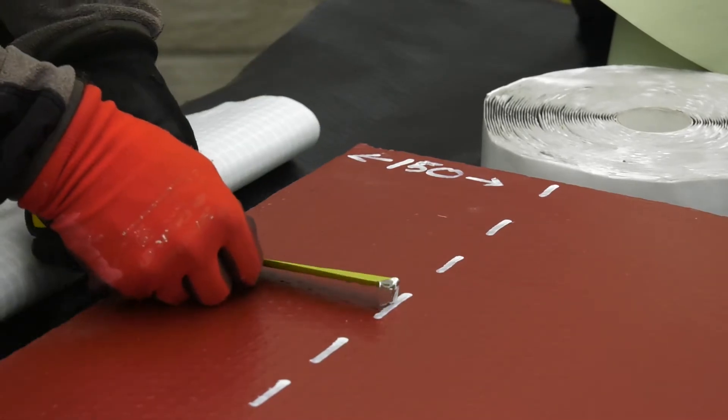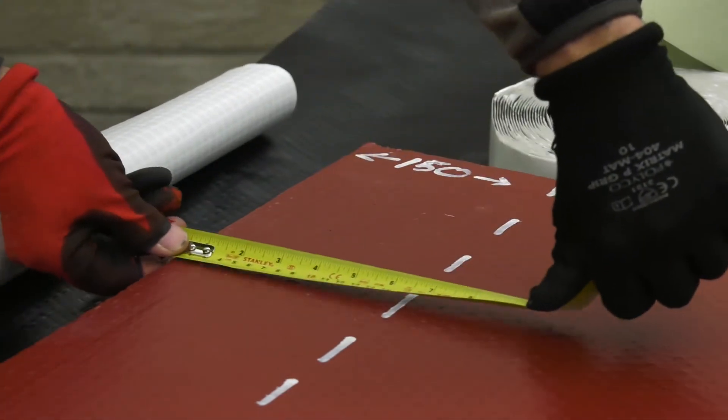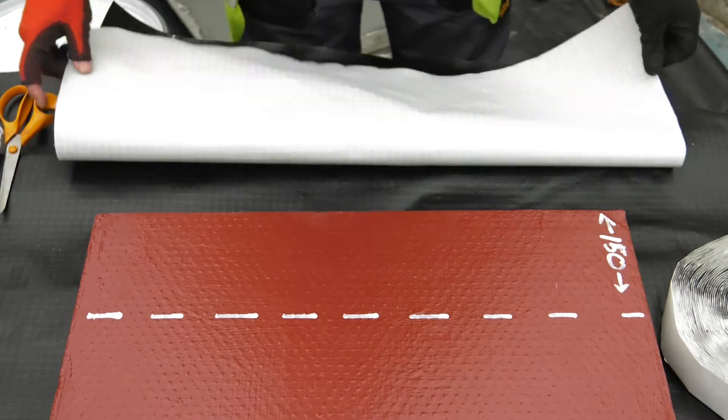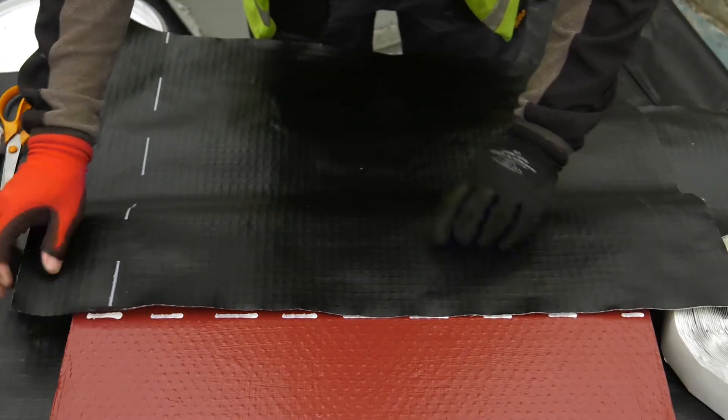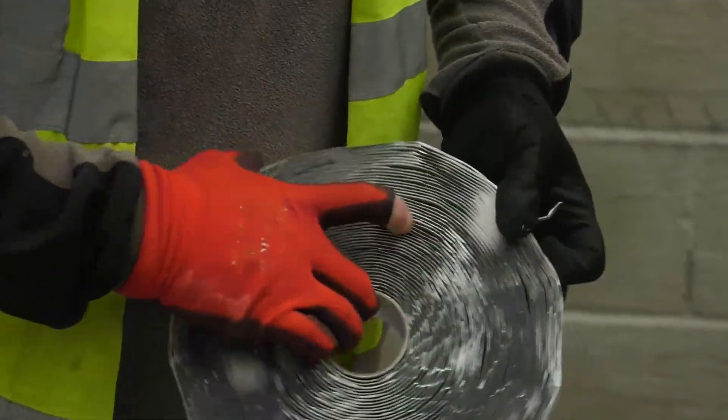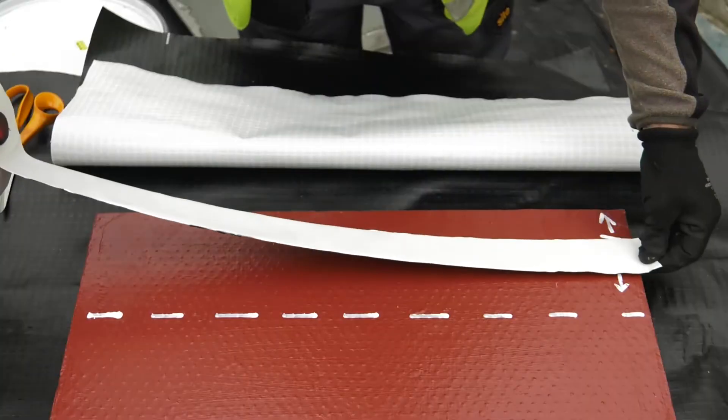Once the LGB has cured, measure a minimum of 100 millimetres from the outer edge of the application and mark a line. This provides the minimum overlap between the LGB and the sheet membrane. Ensure the joint on both the LGB and sheet membrane is clean and dry.